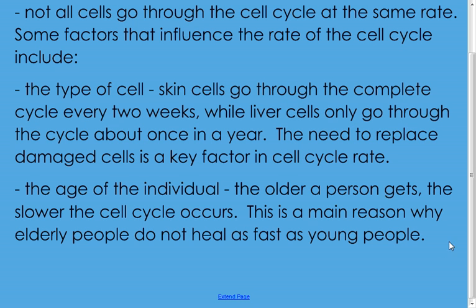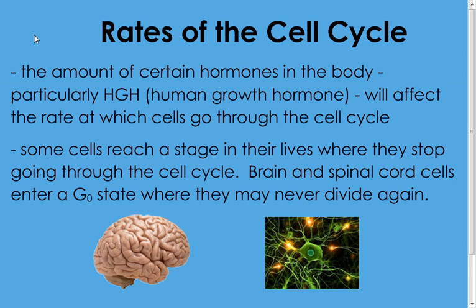The need to replace damaged cells is also a factor in how fast the process takes place. The age of an individual also affects the rate — a young person will go through the cell cycle much faster than an older person. Elderly people don't heal injuries nearly as fast because their cells simply don't divide as quickly. A sprained ankle at age 16 heals much differently than at age 60. Other factors include the amount of certain hormones — Human Growth Hormone (HGH), made by the pituitary gland, affects the rate at which cells go through the cell cycle. More HGH means faster cell division and more growth.